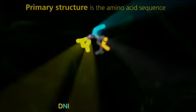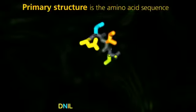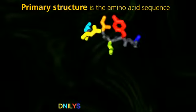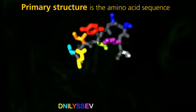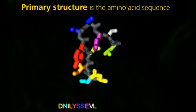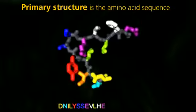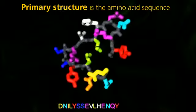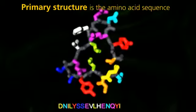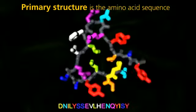Primary structure is the amino acid sequence. Here we see a protein assembling one amino acid at a time. The side chain size is part of what determines how a protein folds.